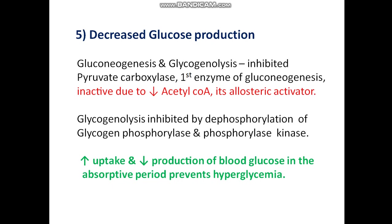Fifth is decreased glucose production. With plenty of glucose available, there is no need for extra glucose, so both gluconeogenesis and glycogenolysis are inhibited. Pyruvate carboxylase, the first enzyme of gluconeogenesis, is inactive due to decreased acetyl-CoA, its allosteric activator. In the fed state, acetyl-CoA is utilized for synthetic and structural purposes, so gluconeogenesis decreases.